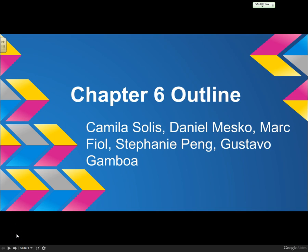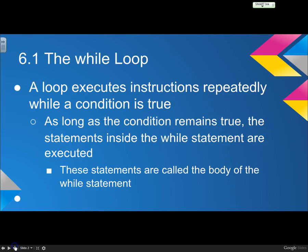This is period 4, computer science, chapter 6. So 6.1 is the while loop. Basically, the while loop executes instructions repeatedly until the condition is not true anymore. If you have an infinite loop, for example, it would just keep repeating infinitely, so you don't want to do that. The statements in the while loop are called the body of the while statement.